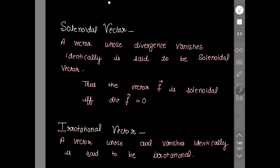What is a solenoidal vector? A vector whose divergence vanishes identically is said to be a solenoidal vector. Thus, the vector F is solenoidal if and only if divergence of F is equal to zero. 'If and only if' means both ways: if the vector is solenoidal then divergence F is zero, and if the divergence of a vector is zero then it is a solenoidal vector.